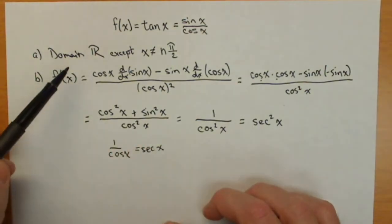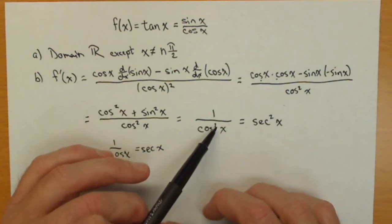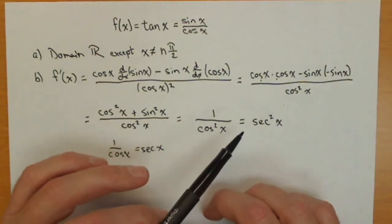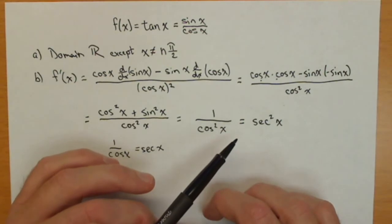So we get that we could write the derivative of tangent of x as 1 over cosine squared x, or secant squared x, depending on what's easier for us to use.